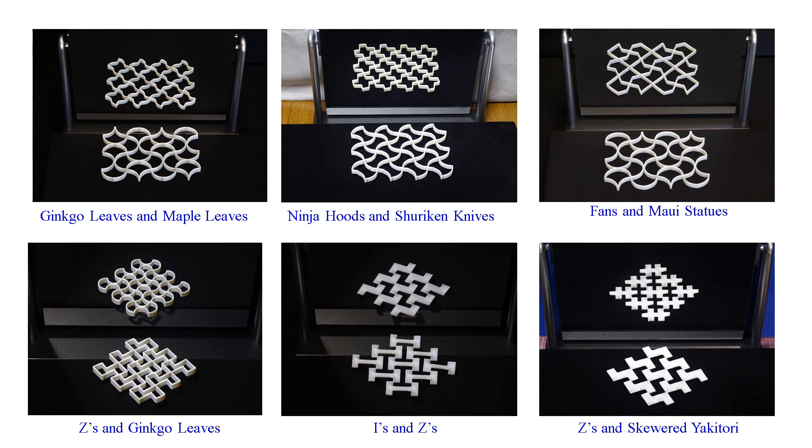Here are examples of ambiguous tilings obtained by the proposed method. A ginkgo leaf tiling changes to a maple leaf tiling. The ninja hood tiling changes to a shuriken knife tiling, and so on.